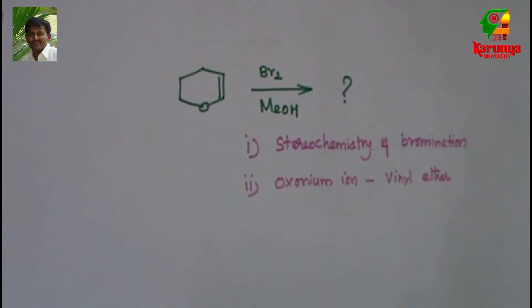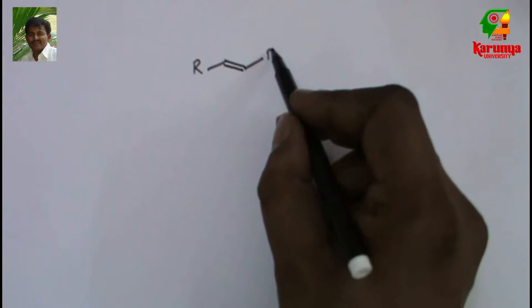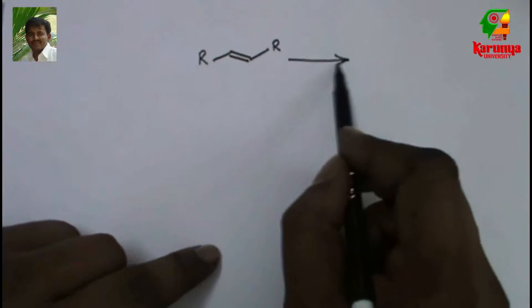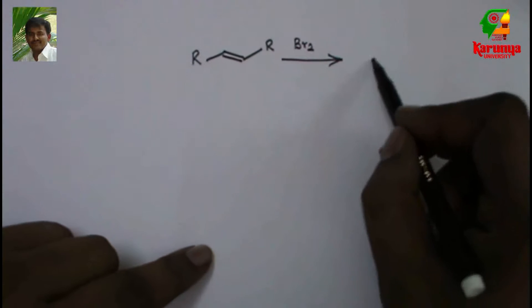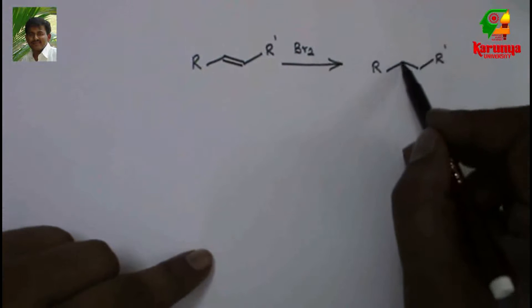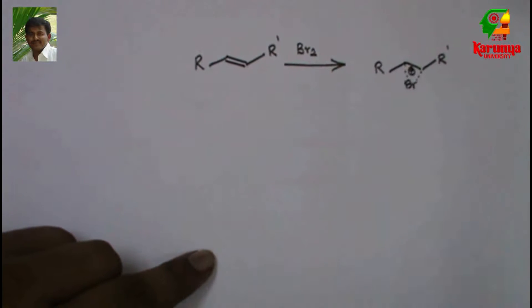Now let us go to the first concept, that is stereochemistry of bromination. When a simple alkene is treated with bromine, it forms a bromonium ion. So this is what we call bromonium ion.